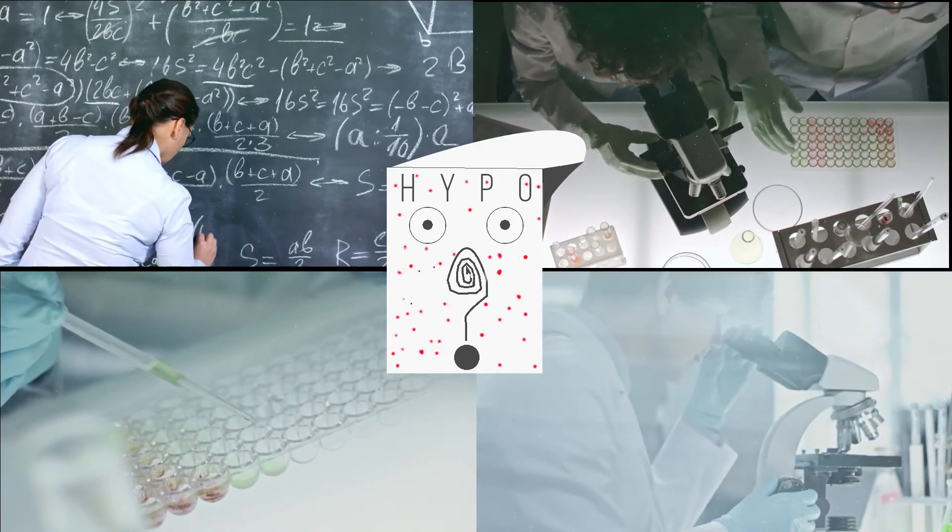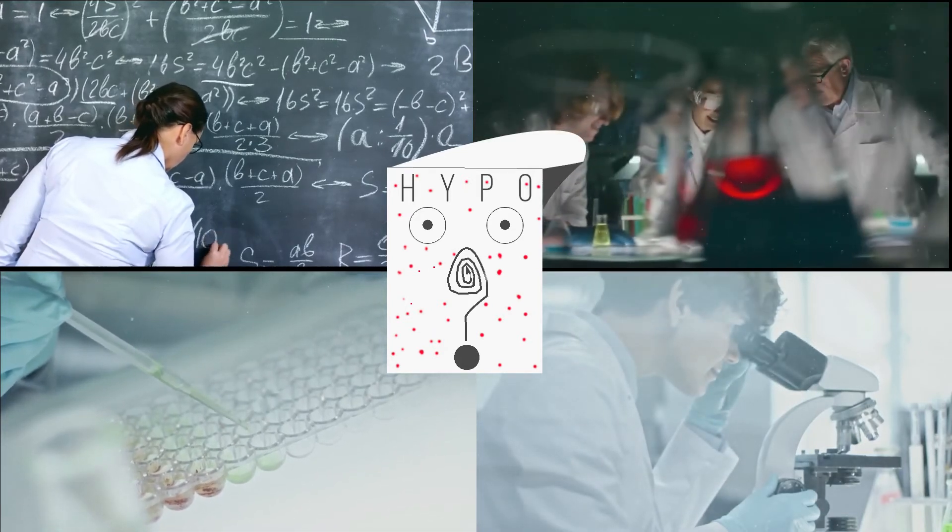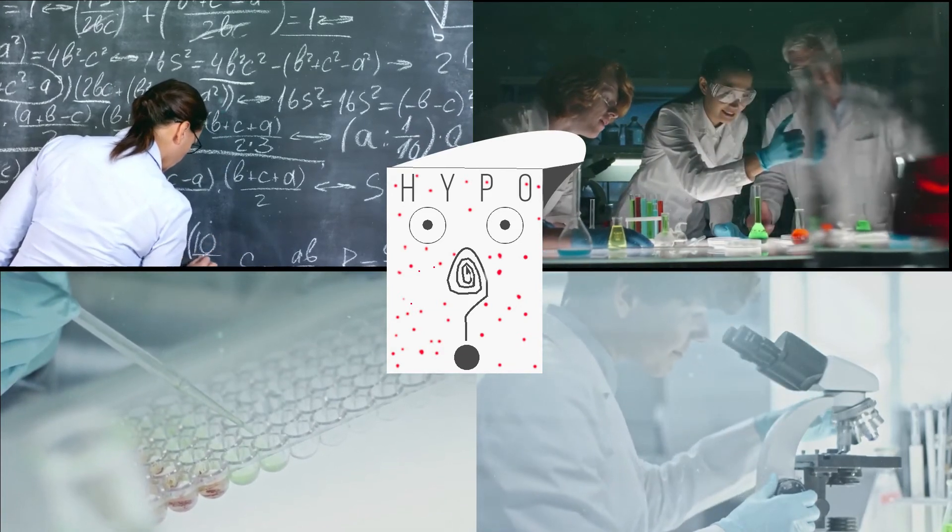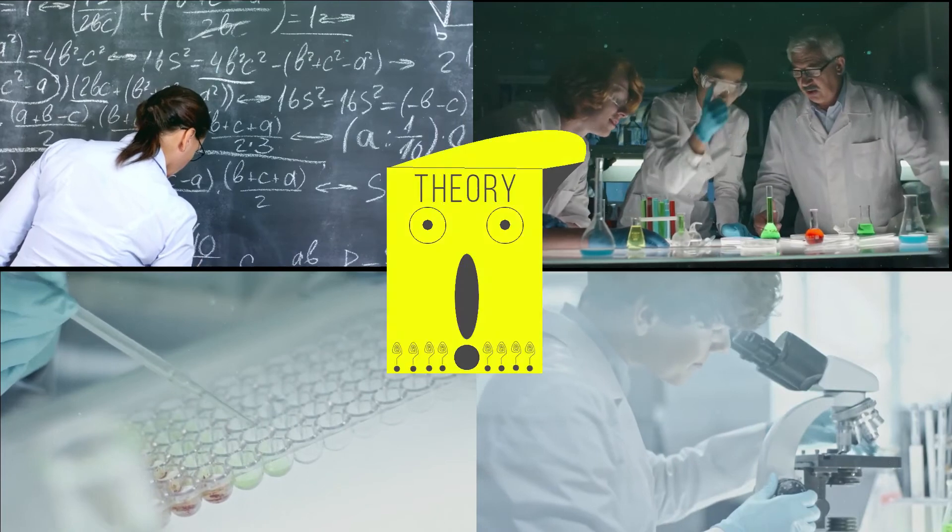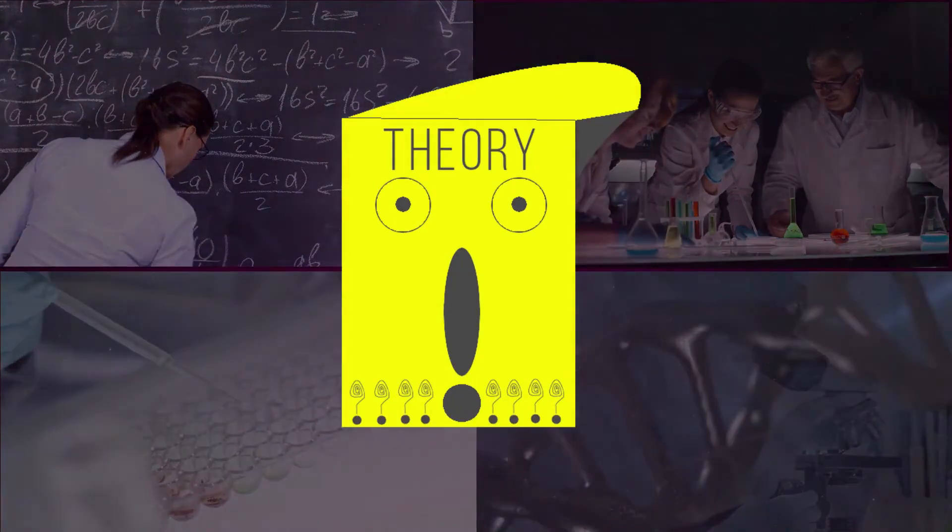This is how we can determine whether your hypothesis can produce objective results, available for all to retest, or are just merely subjective results. It's only after multiple retests by different scientists getting the same results that consensus among the scientific community begins to form. At this point, your hypothesis has evolved into a theory.